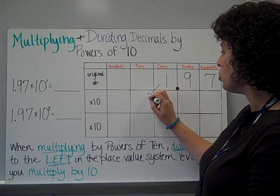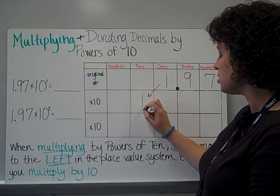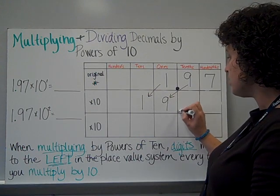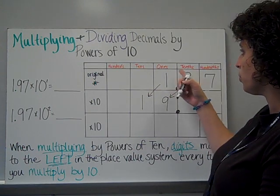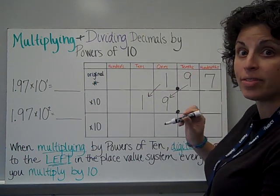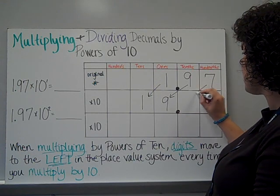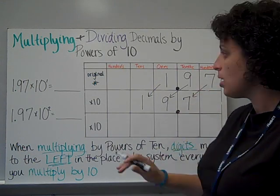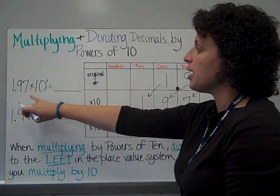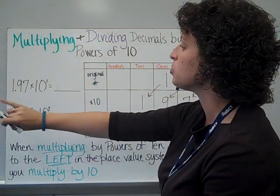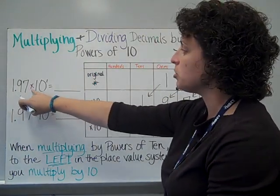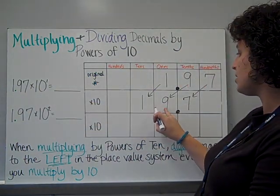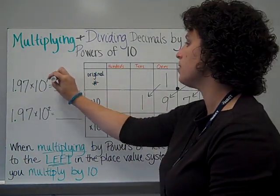So this 1 is going to move to the tens place. The 9 will move to the ones place. Decimals don't move — it's always between the ones and tenths places. And so this 7 is going to move up to the tenths place. So the product, the answer to this multiplication problem, 1 and 97 hundredths times 10 to the first, would be 19 and 7 tenths.